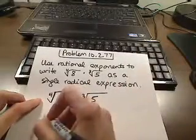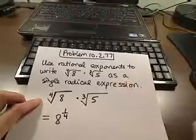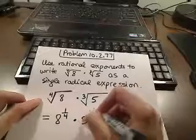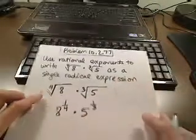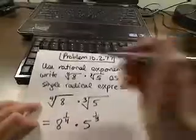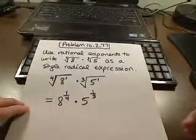So I'm going to go ahead and convert these. This is 8 to the 1 fourth power and 5 to the 1 third power, just rewriting them with rational exponents. The 1s are coming from the exponents on our numbers underneath there.